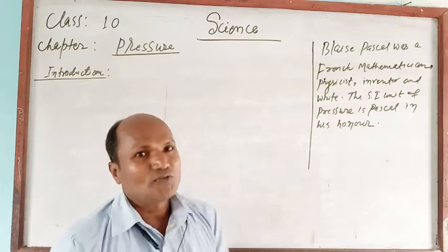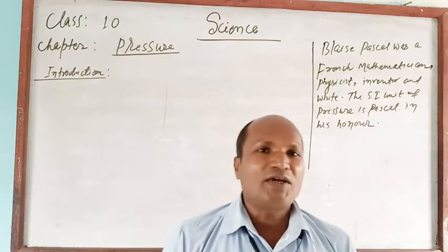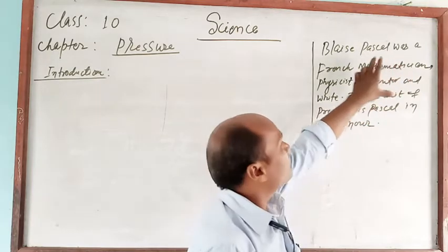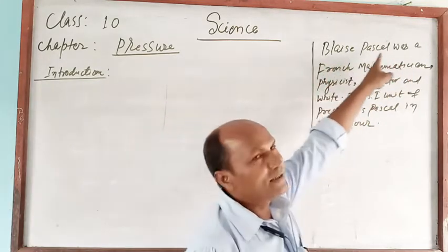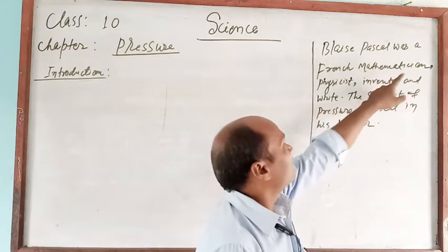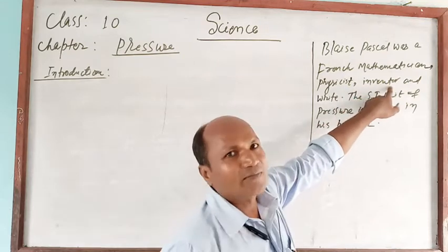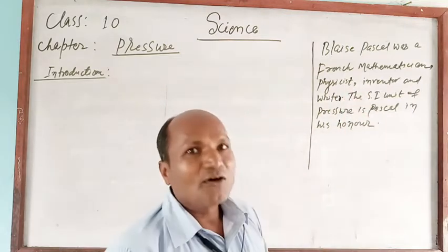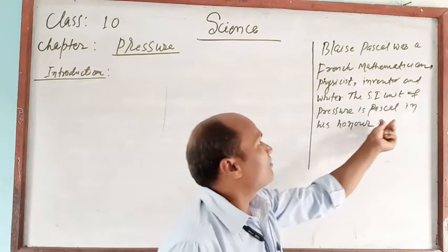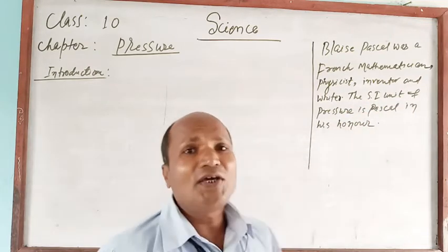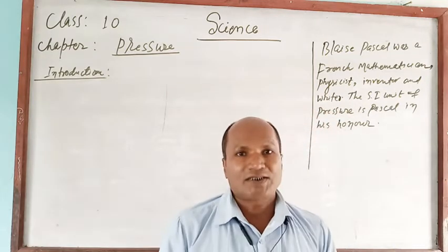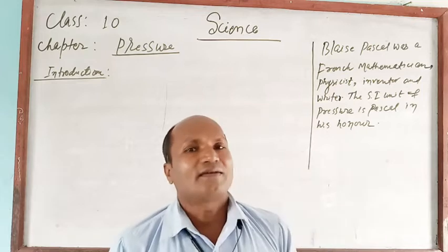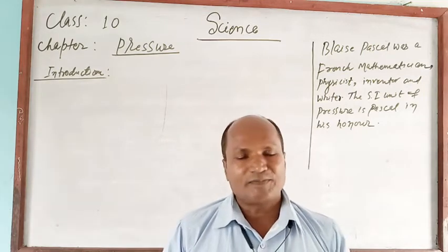The concept of pressure and its unit was discovered by the very famous, well-known scientist Blaise Pascal. Blaise Pascal was a French mathematician, physicist, inventor, and writer. Because he gave us the unit of pressure, it is named Pascal. In other words, the unit of pressure is Newton per square meter, which is also called the Pascal.